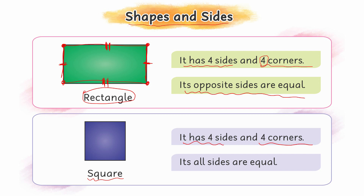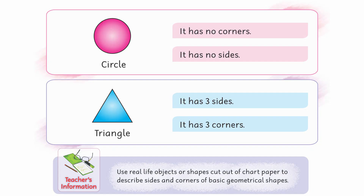Square में भी four corners हैं और अगर sides observe करें तो four ही हैं: one, two, three, four. लेकिन फर्क यह है कि square में all sides are equal — ये side इसके equal है, ये इसके equal है। इसका मतलब है, चारों sides अगर equal हों तो उसे हम square कहते हैं।